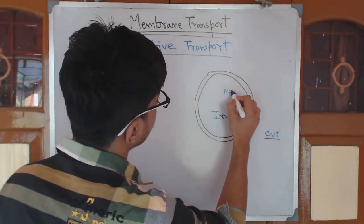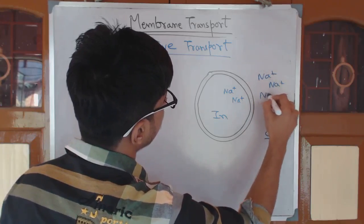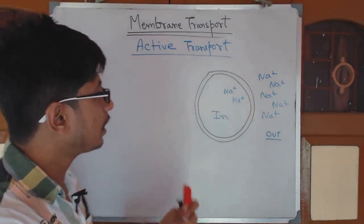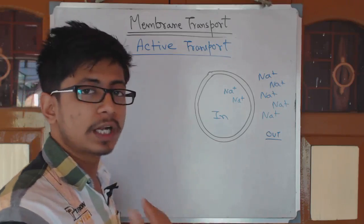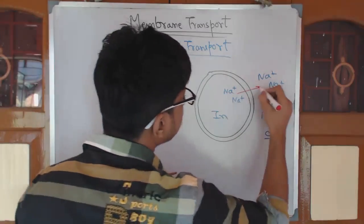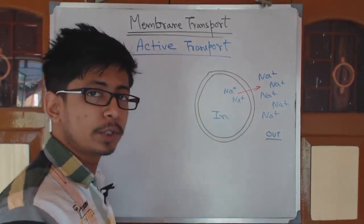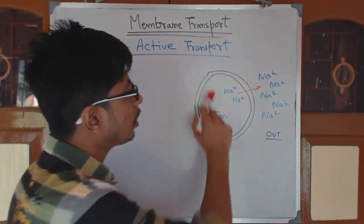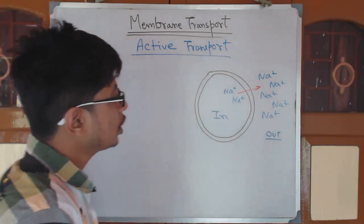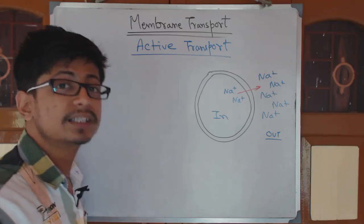Normally, sodium concentration is less inside while sodium concentration is very high outside. So what we need to do in this case is transfer sodium outside the cell from inside. We are going against the concentration gradient, and for achieving this task we need a specific type of membrane protein, because sodium cannot transfer itself through the cell membrane due to the hydrophobic core region inside.